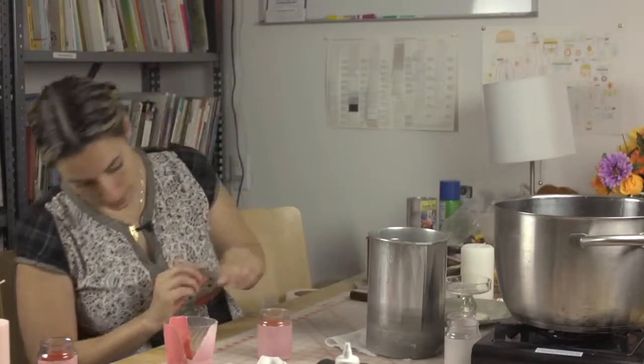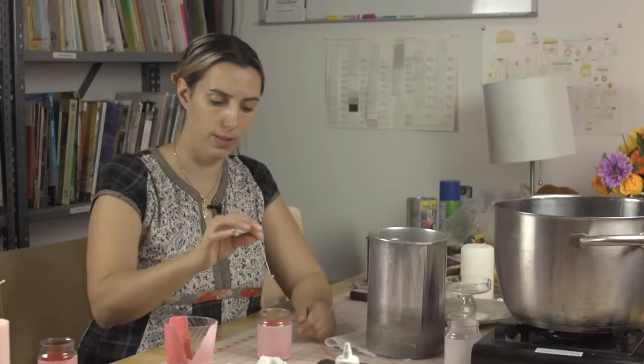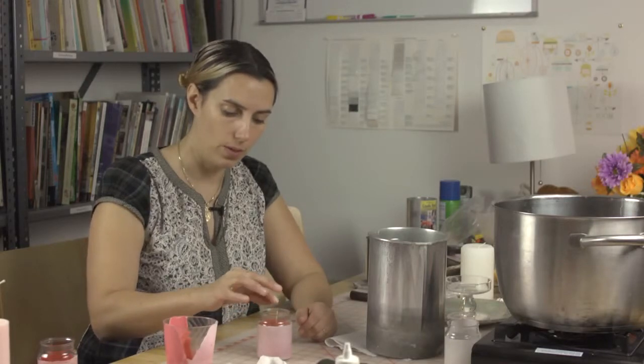And then before it gets too solidified, I'm going to take a pre-waxed wick with a wick tag on the bottom, and I'm going to just place it in and let it balance, and I'm going to let the whole thing set up.